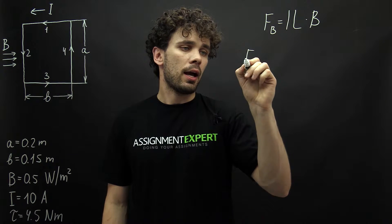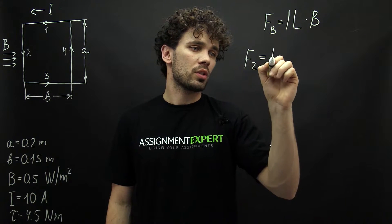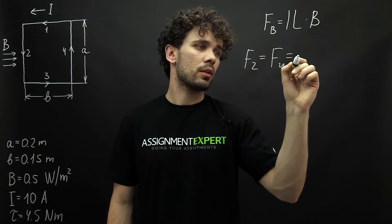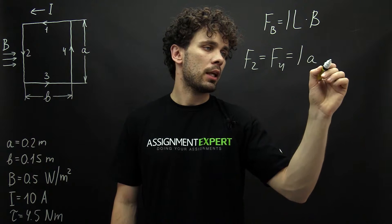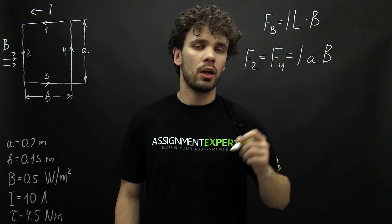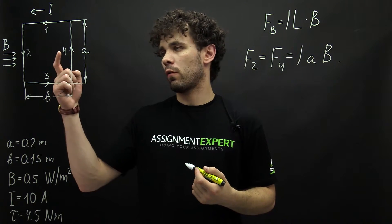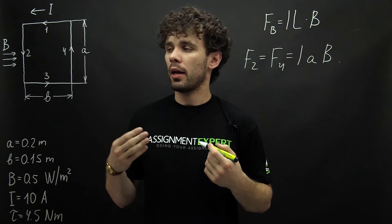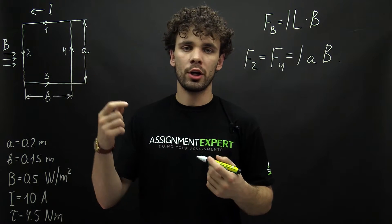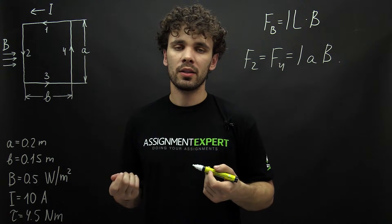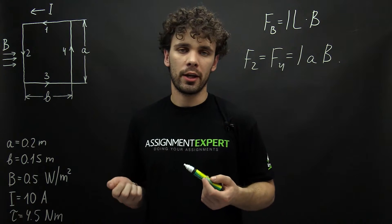So, in our case F2 equals F4 and equals I times A times B. And actually the direction of force 2 is towards me and the direction of force 4 is away from me. Now let's have a look at our problem from another angle.